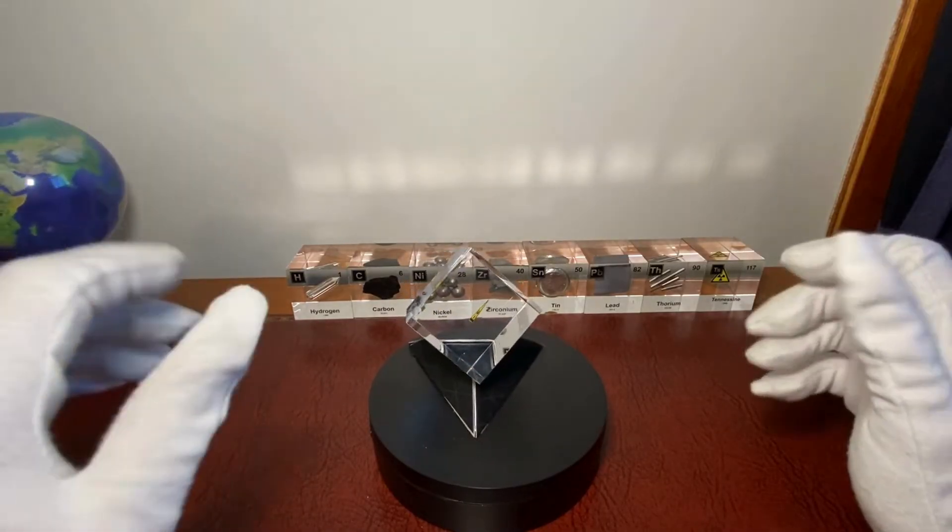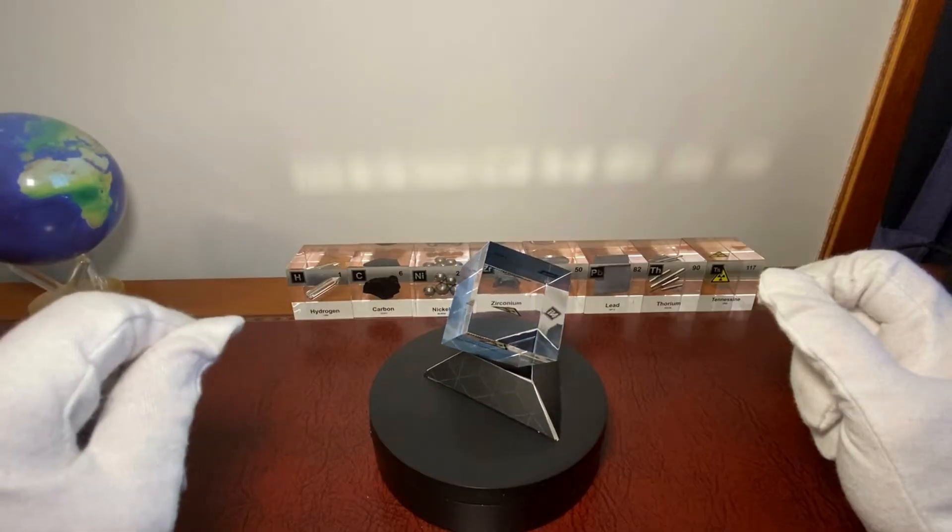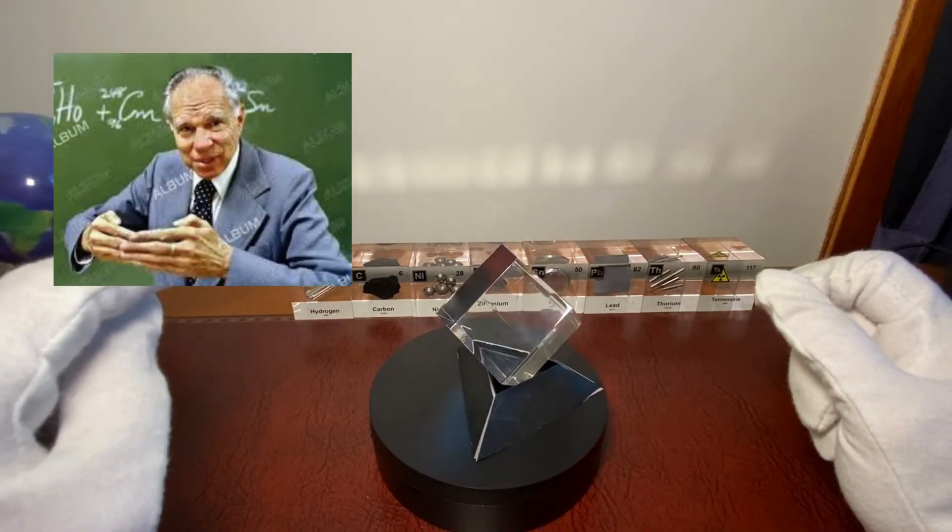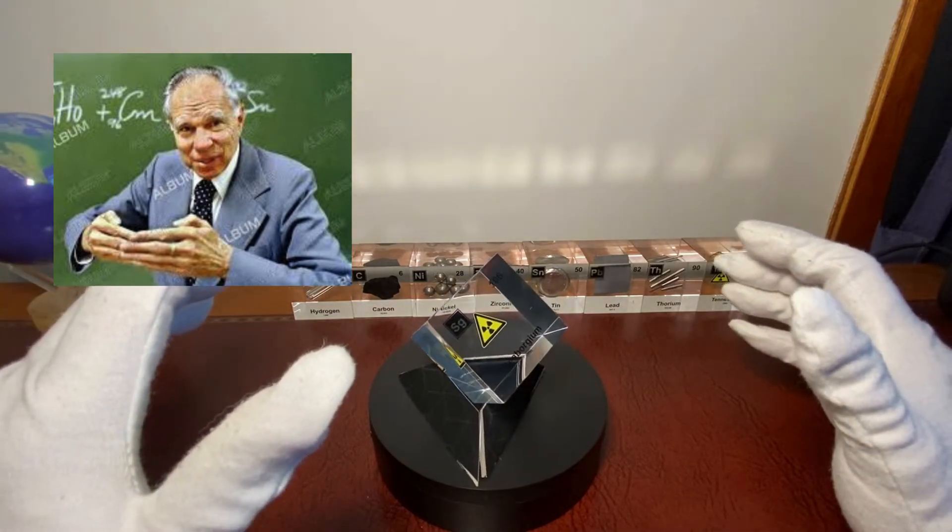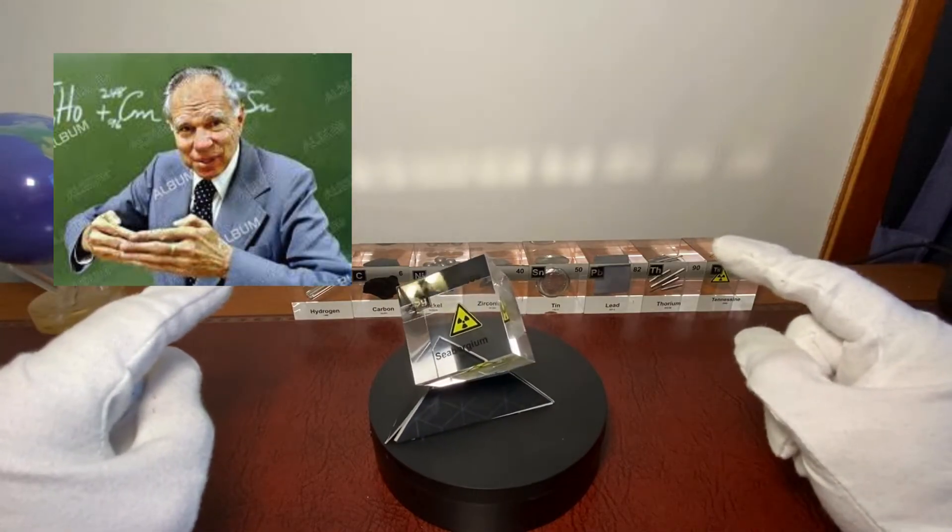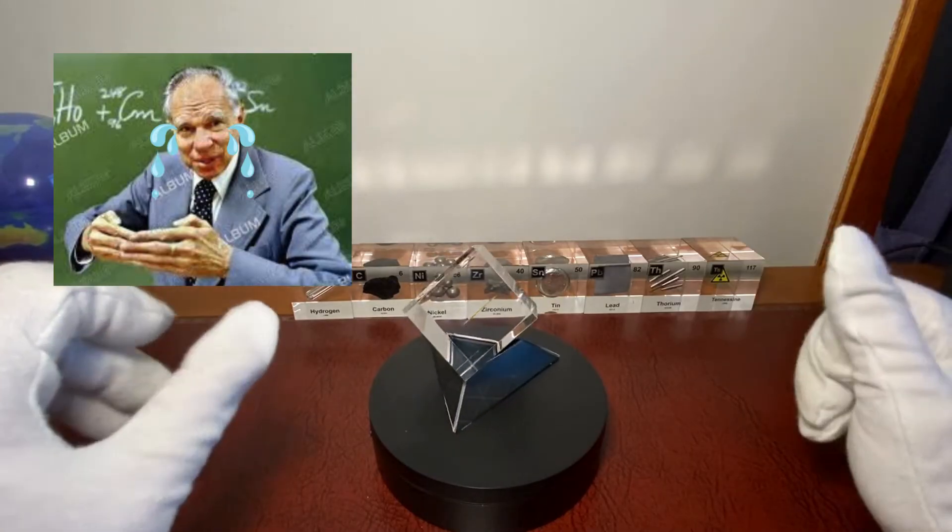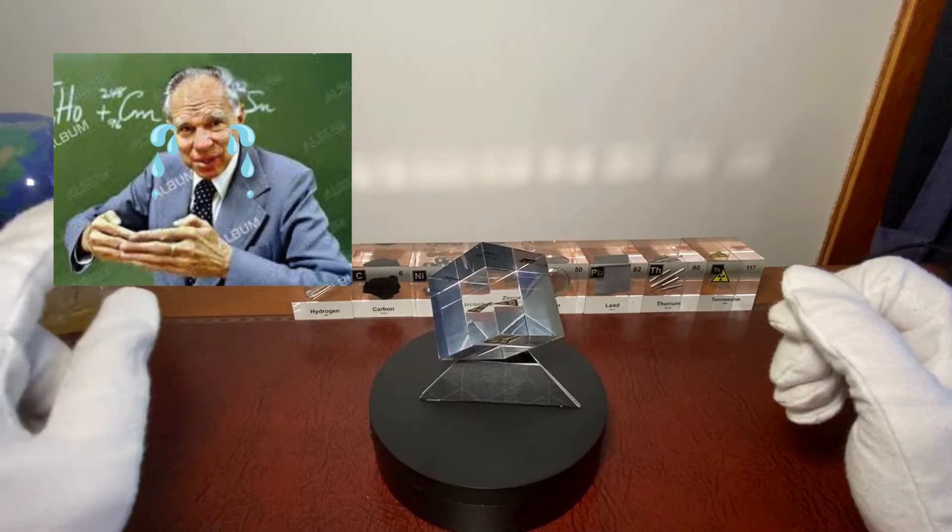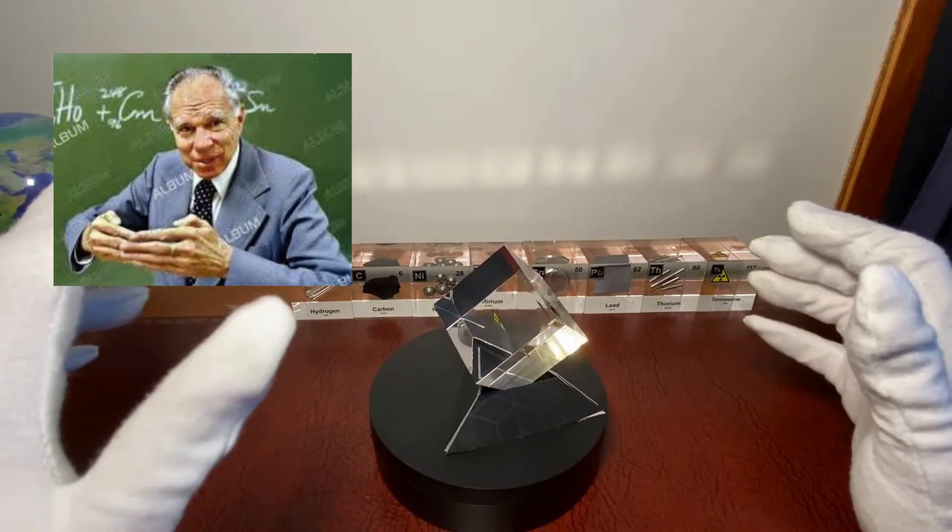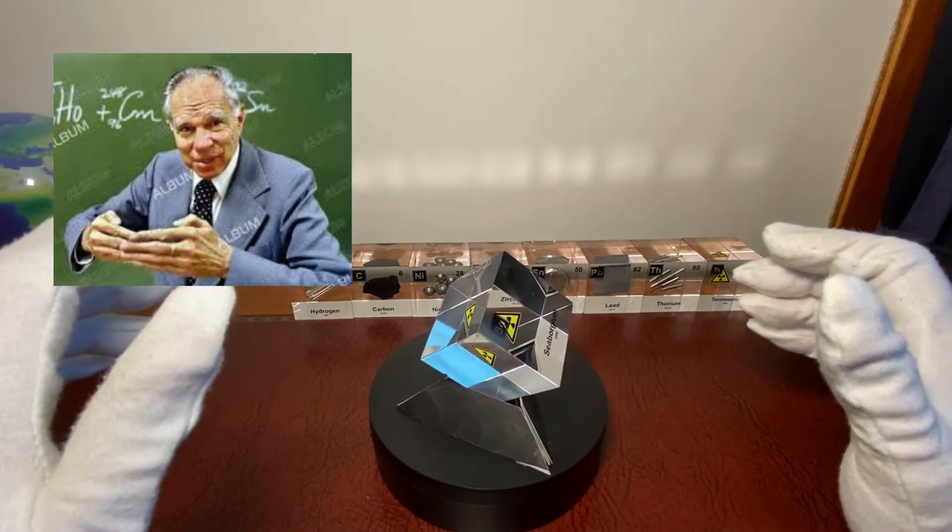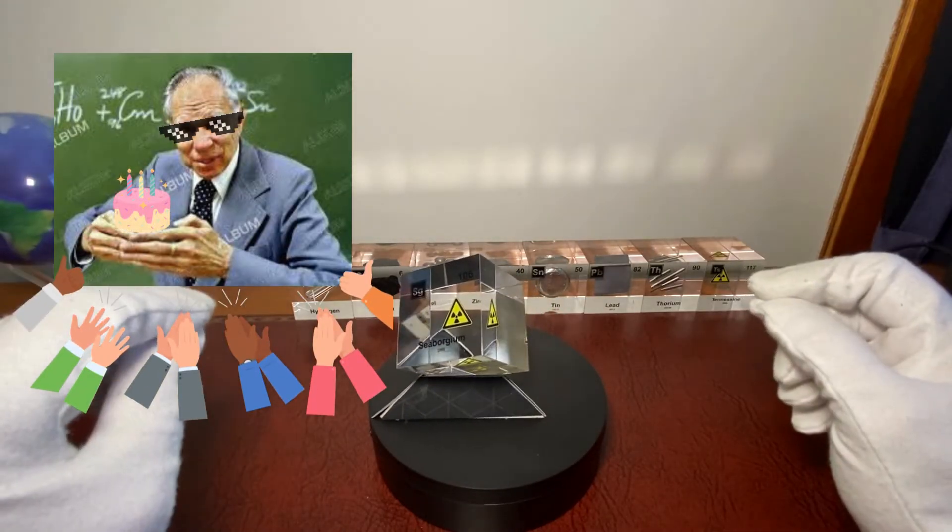They wanted to name it after the scientist Glenn T. Seaborg, but the International Union of Applied Chemistry decided no, we're not going to do this. They rejected this request at first because an element was never named until then after a living scientist. However, upon reviewing the protocols, it turned out that there was no such protocol. There wasn't a rule that stated that elements couldn't be named after living people, so that's why it was called Seaborgium.